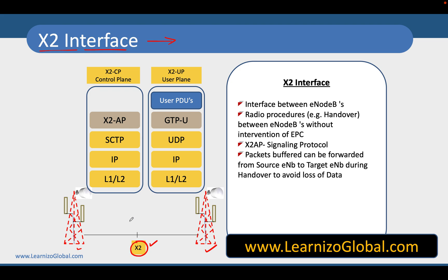The major purpose of the X2 interface is supporting user plane and control plane communication between eNodeBs during handover procedures. This interface carries both control plane and user plane information. For the control plane they typically use a protocol called X2AP, however for the user plane they use GTP-U, which stands for GPRS Tunneling Protocol User Plane.